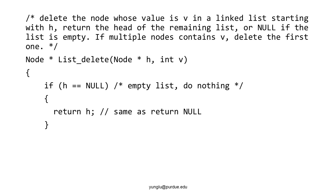If the value is not stored in the linked list, the linked list should be unchanged. If several nodes store the same value, this function deletes the first node. The beginning of the function checks whether h is null or not. If h is null, the list is empty and nothing can be deleted — the function returns null.